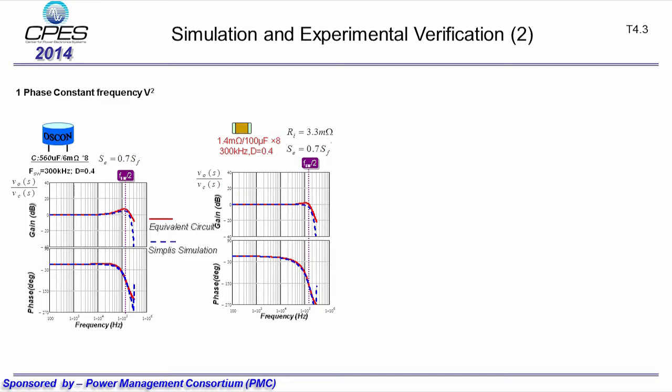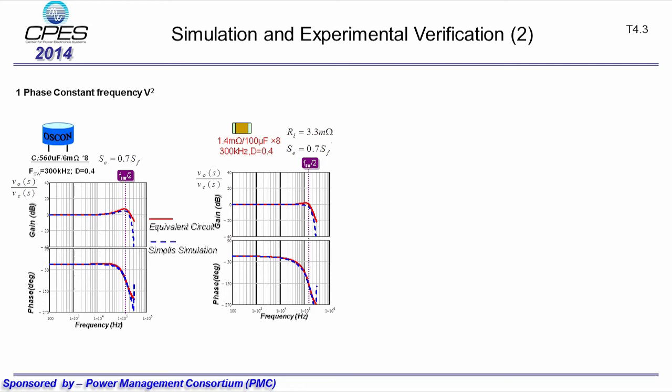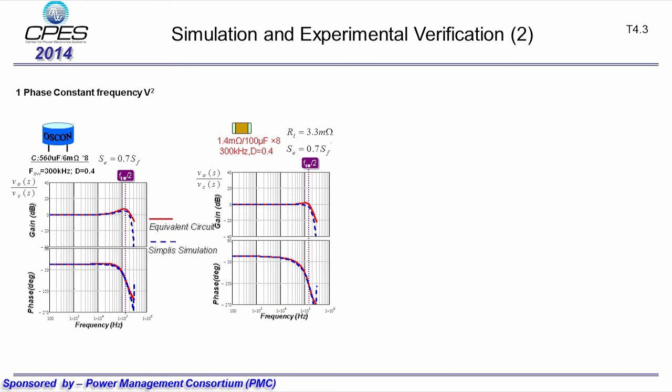This shows simulation verification of the control-to-output voltage transfer function for constant frequency V² control. For both cases using OSCON capacitors and ceramic capacitors, the control-to-output voltage can be designed as a flat gain up to very high frequency, and the model agrees well with simulation results up to half of switching frequency.